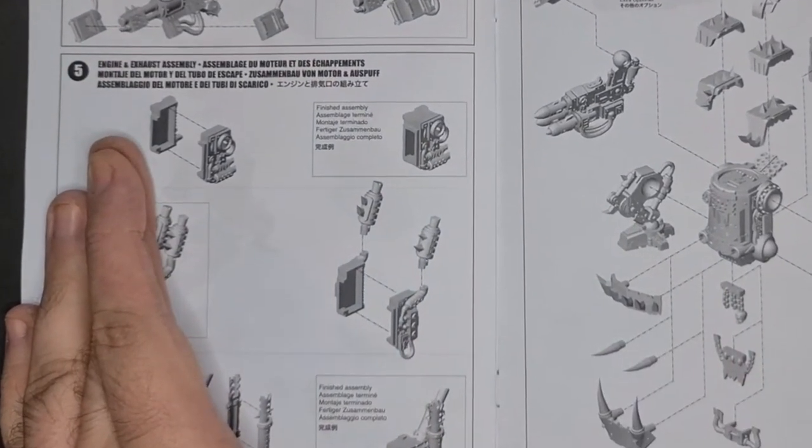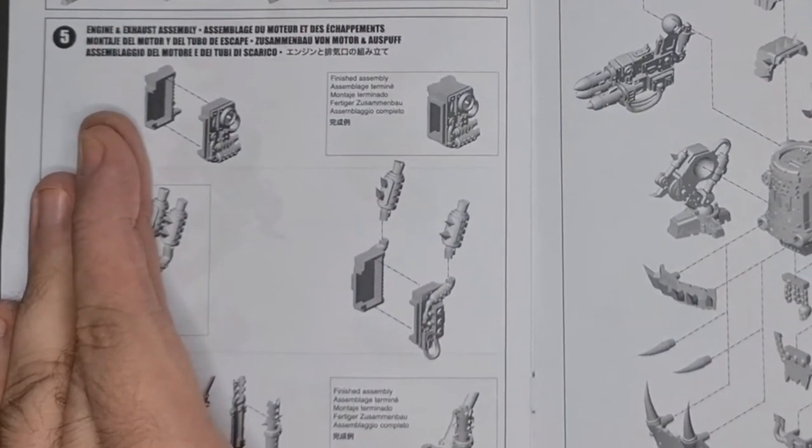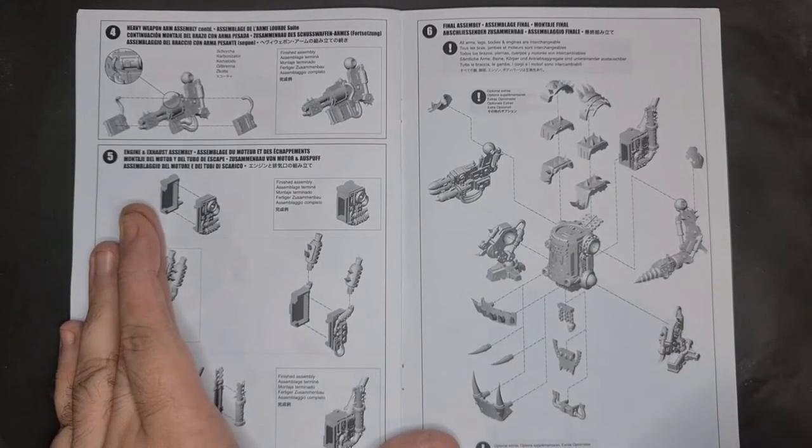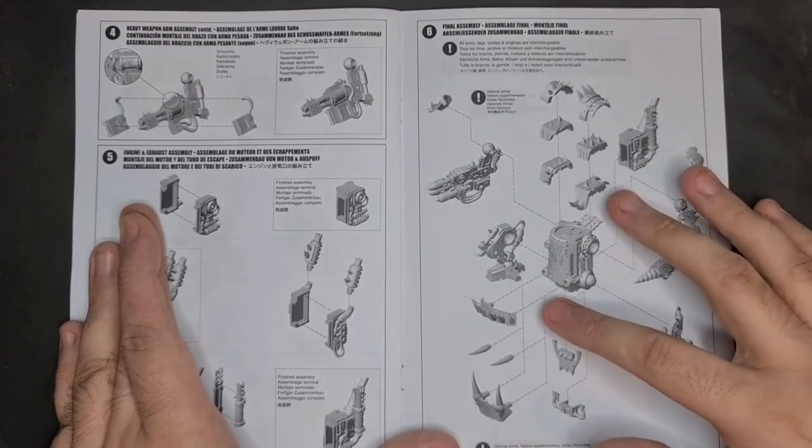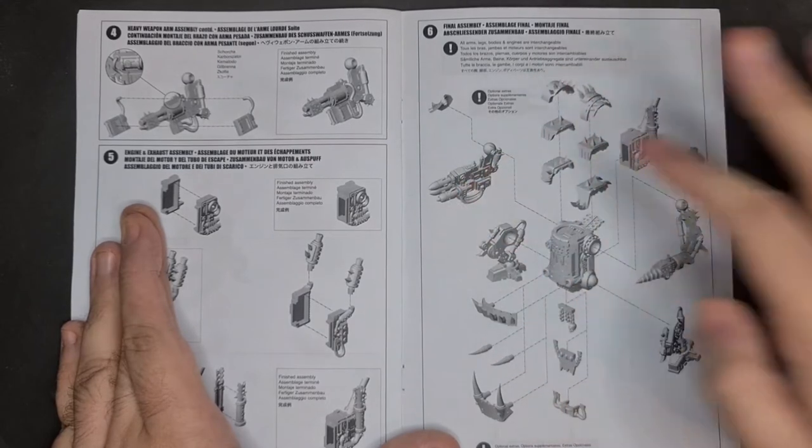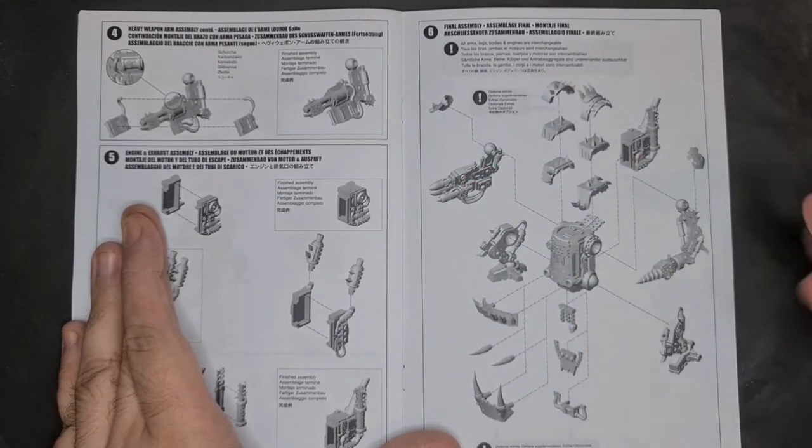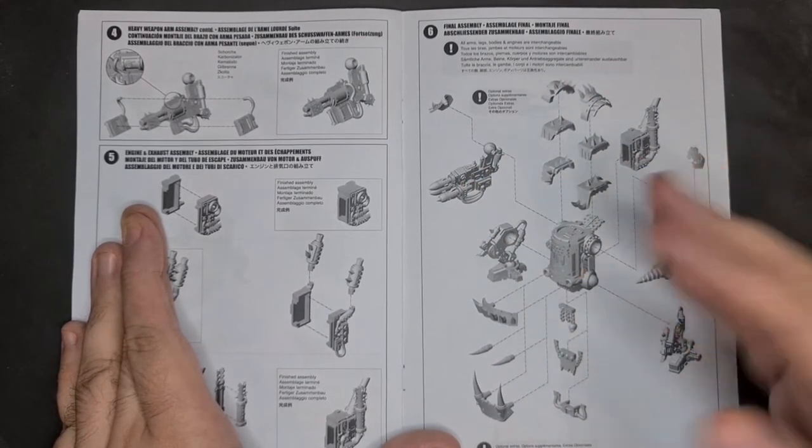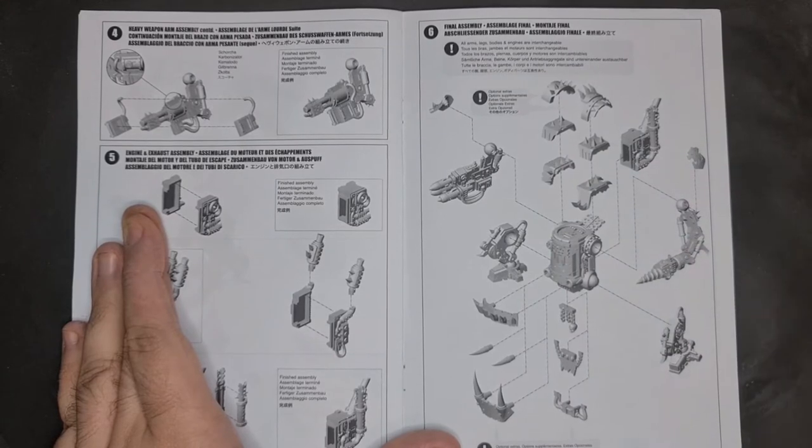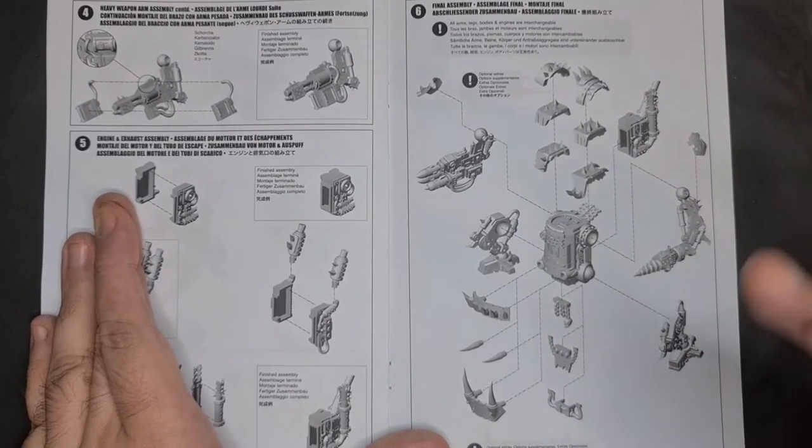Then you get your final assembly. So you get all your pieces. You've got your body, you've got your weapons and legs built, and now you can kind of have a bit of fun. Obviously you need to put the limbs on, so you can kind of have fun with these.